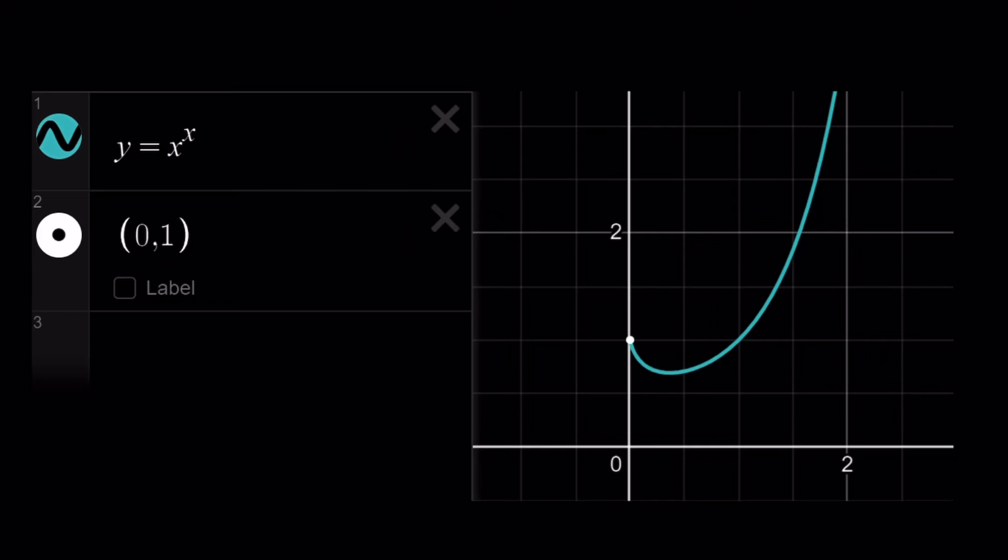As x approaches infinity, y approaches infinity. As x approaches 0 from the right, y approaches 1, which is the limit. So, this also means that 0 to the power of 0 is equal to 1. Do you see what I did there?